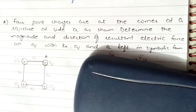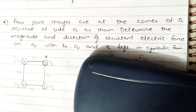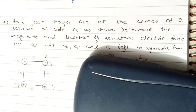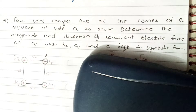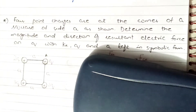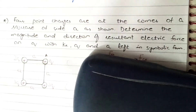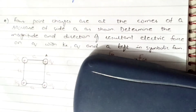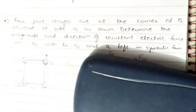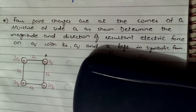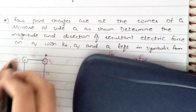Hey dear students, the question for today's video is: four point charges are at the corners of a square of side a, as shown in the figure. Determine the magnitude and direction of the resultant force on q, with ke, q, and a left in symbolic form. We have to find the answer without substituting values for ke (Coulomb's constant), q (the charge magnitude), or a (the distance between charges).